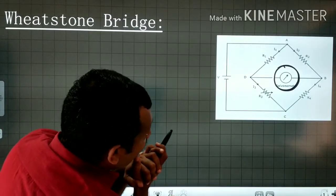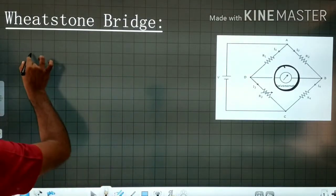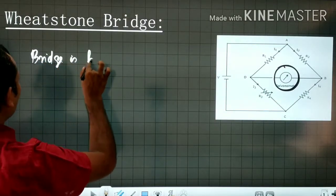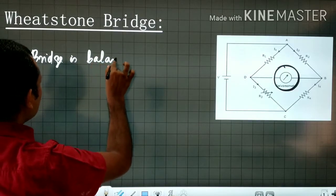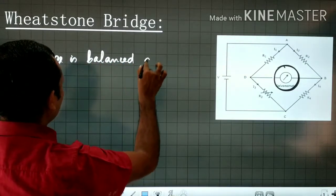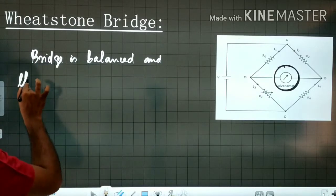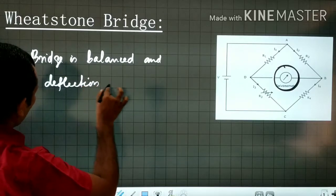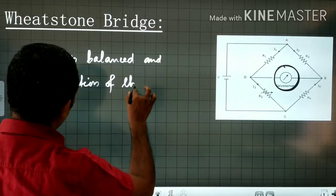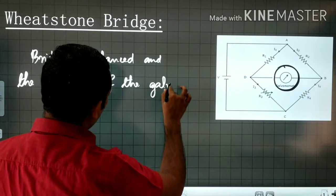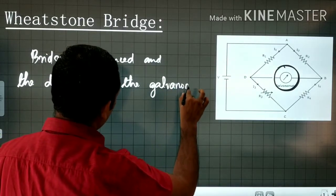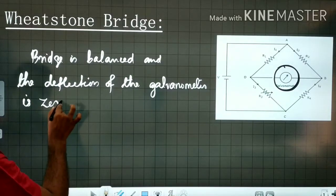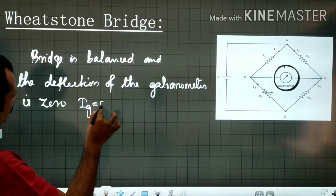Bridge is balanced. Bridge is balanced, and the deflection of the galvanometer is zero. The deflection of the galvanometer is zero, which means Ig is equal to zero.